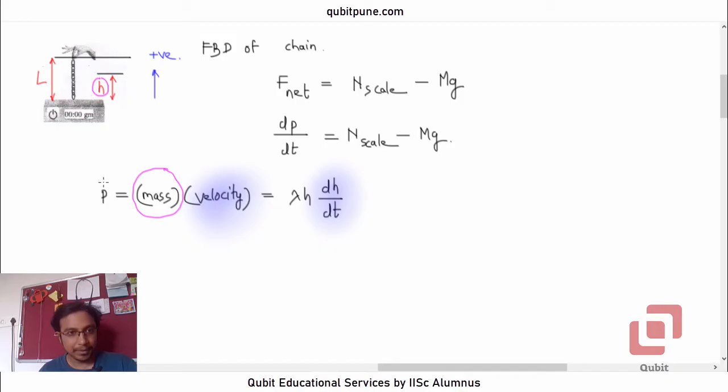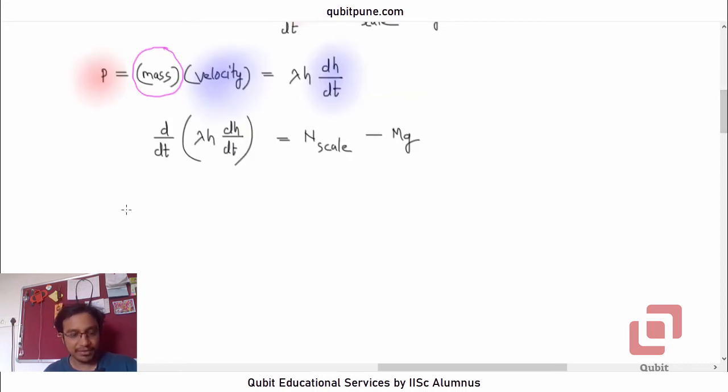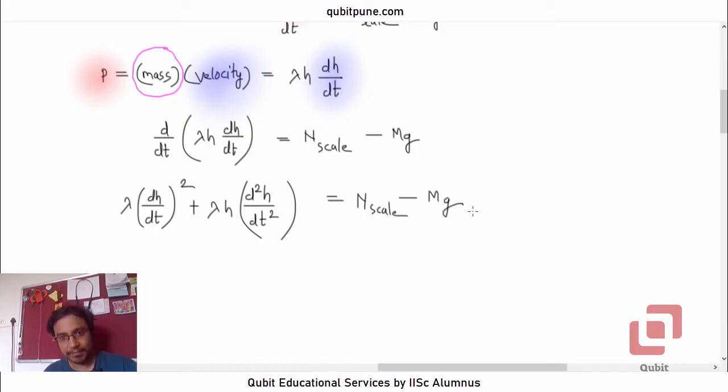Let us now substitute this p and see what we get. We will get the derivative of lambda h times dh/dt equals N_scale minus mg. Let us apply the product rule of differentiation. We shall get lambda times (dh/dt)² plus lambda h times d²h/dt² equals N_scale minus mg.